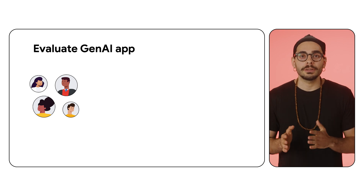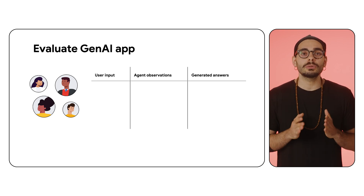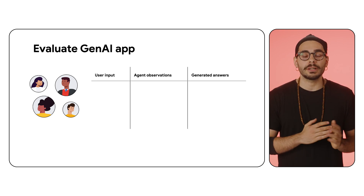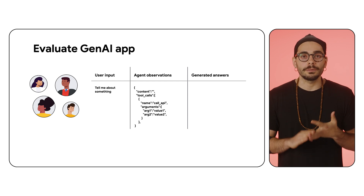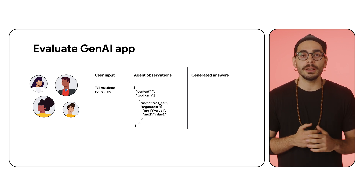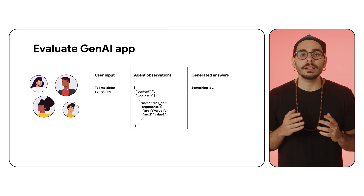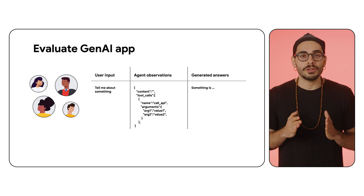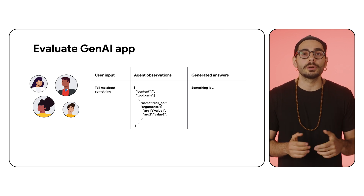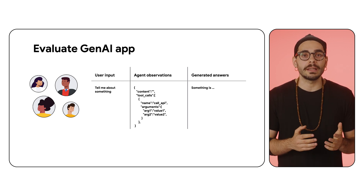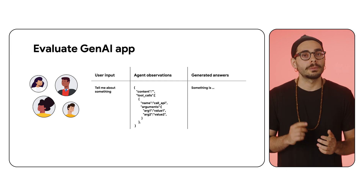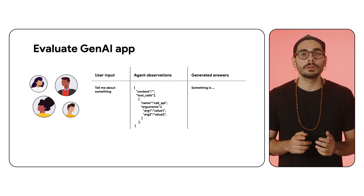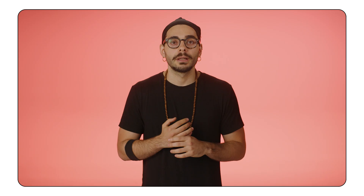To evaluate your agent, you need to collect and analyze real-world interaction data: user input, agent observations including tool calls and arguments, and generated answers. Subject matter expert input is crucial for analyzing this data and assessing agent performance efficiently. But this process, while valuable, can be time-consuming.